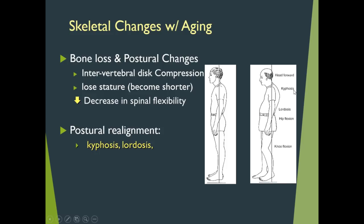Kyphosis is the curvature of the back particularly in the shoulder area where the collapse is inward toward the chest. There is a natural curvature to the normal human back; however, as age takes its toll, these curves tend to be exaggerated. Lordosis, on the other hand, is a lower back curvature that, depending on the functional experiences of the individual, can go one way or the other. It is not surprising that a lot of elderly experience lower back pain.